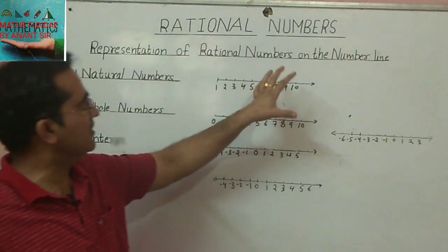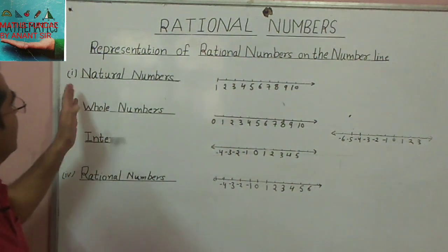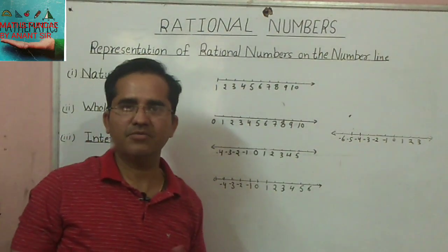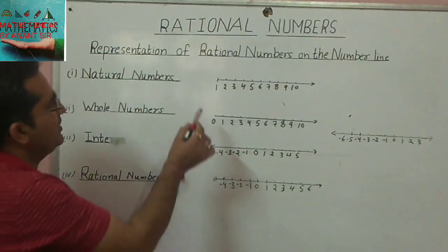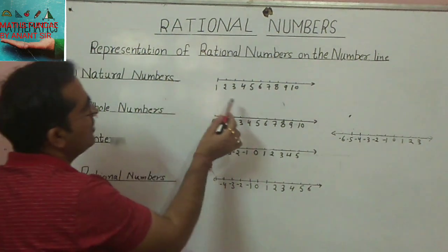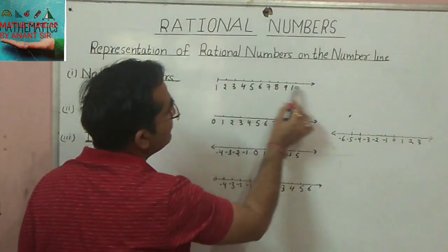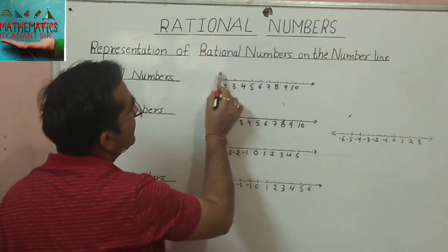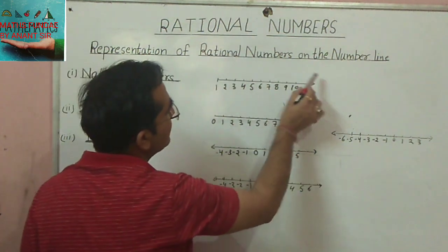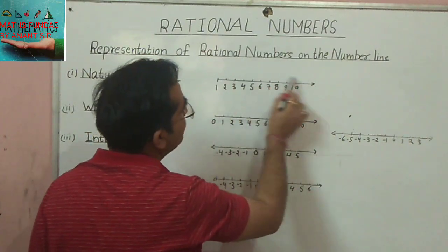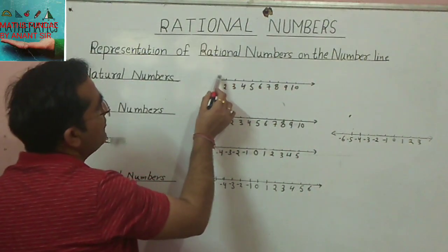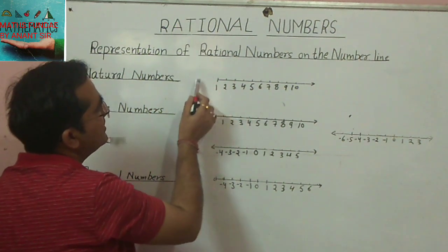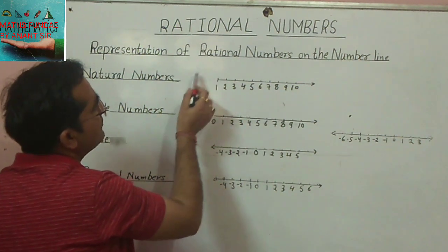Before that, I'll tell you about natural numbers. Natural numbers means all the counting numbers starting from one. We represent natural numbers on the number line starting from one, moving towards the right indefinitely up to infinity. To the left of one, we have nothing — we always move to the right.